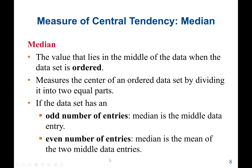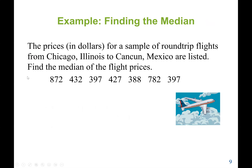If it's an even number of entries, the median is the mean of the two middle values. For example, if the data set has 8 entries, we cannot have only one middle value, so we take the two middle values and find the average. Now let's find the median of the flight prices.